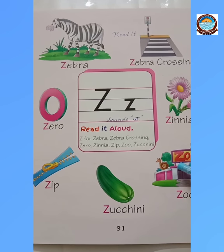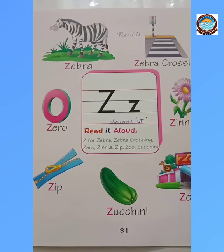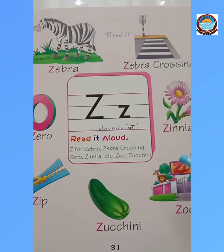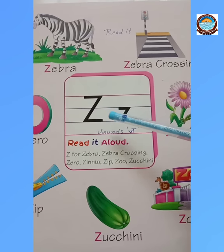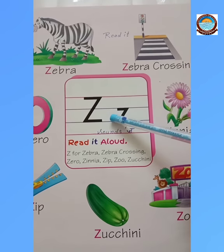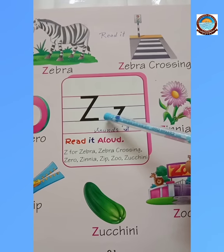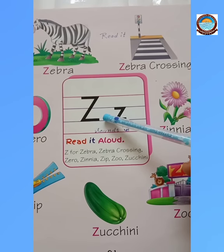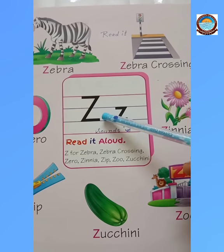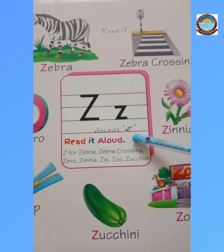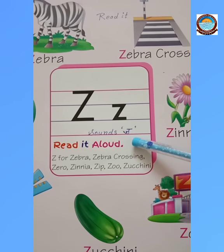Turn to page number 31 of your book. This is letter Z. This is letter Z. Z sounds 'z' — the sound of letter Z is 'z'.